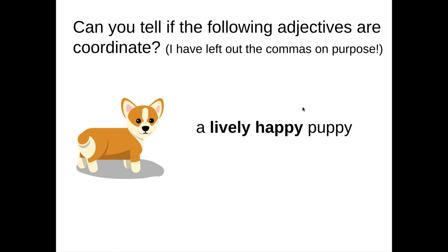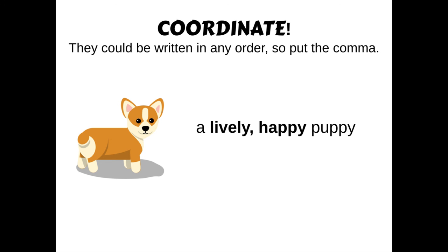Try this one. 'I have a lively, happy puppy.' Look at lively and happy and decide — are they coordinate or not? They are coordinate. You could say 'I have a happy, lively puppy,' or 'I have a lively and happy puppy.' So put that comma there.